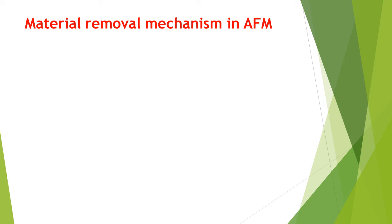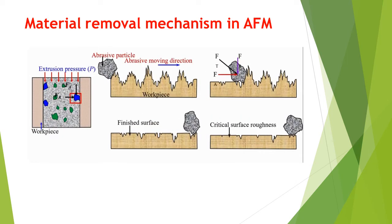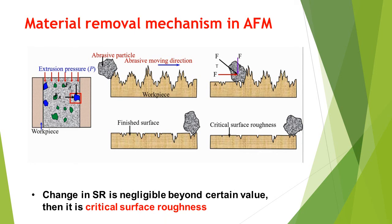In the material removal mechanism diagram, the abrasive moves in the axial direction FA. The abrasive particle moves and the workpiece surface is finished by this movement of the abrasive. Then we get the finished surface. An important term here is critical surface roughness: if the change in surface roughness is negligible beyond a certain value, it is called critical surface roughness.